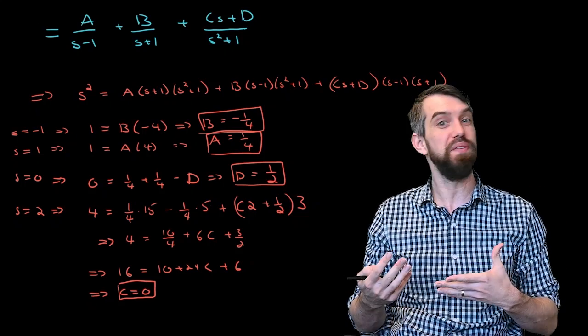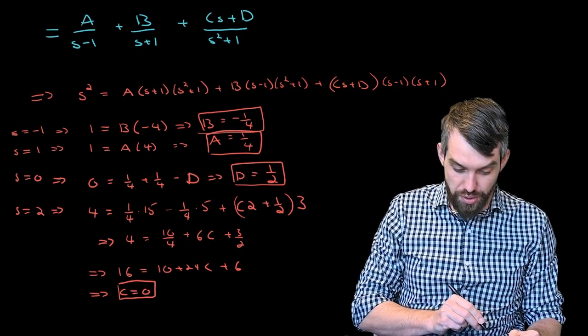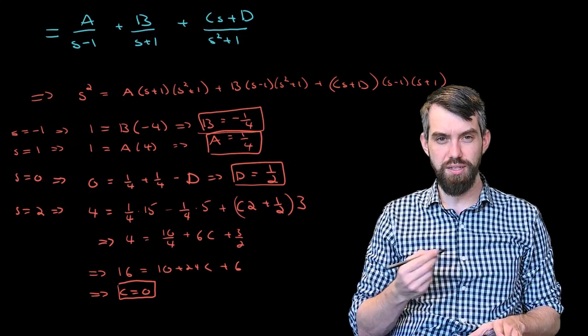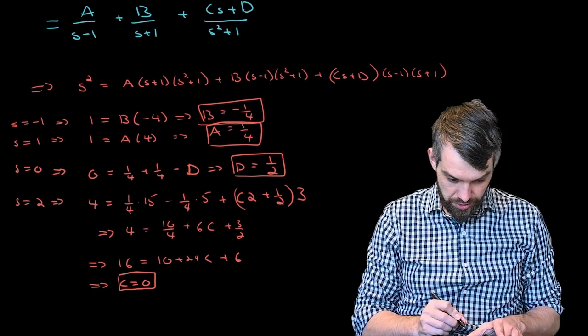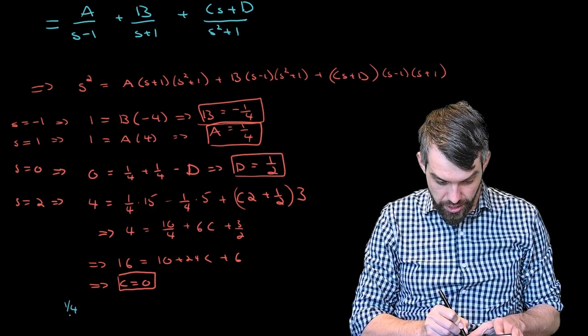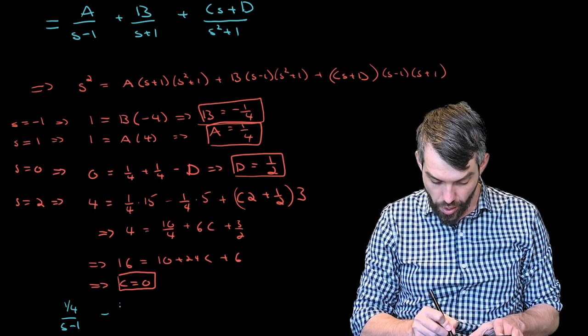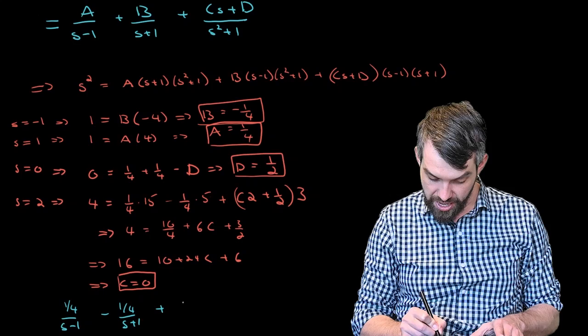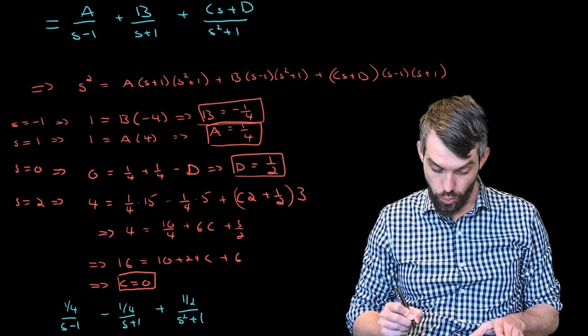Now for the purposes of finding the inverse Laplace transform, what are we supposed to do? I've computed that the A, the B, the C, and the D are these four values, and so what I am thus trying to compute is going to be equal to A which is one quarter divided by s minus one plus B which is negative one quarter divided by s plus one, a zero times C and then plus a D of one half divided by s squared plus one.